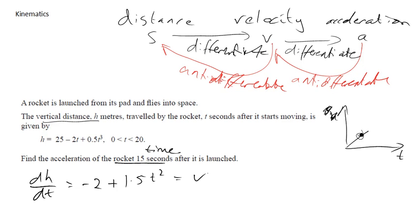I know I need the acceleration, so I need to do dV/dt. So -2 disappears and I get 3t. And that's it. That equals my acceleration. I know t equals 15, so my acceleration equals 3 lots of 15, which is 45.